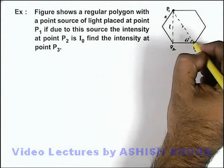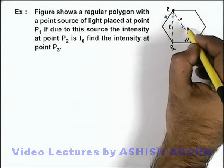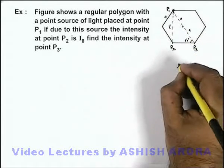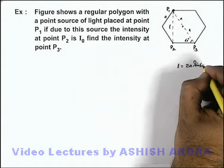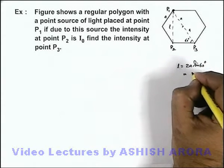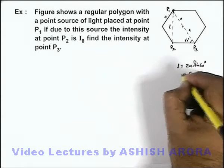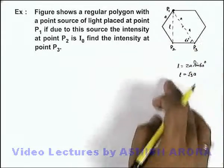So this length can be written as a and a, 2a. So the value of l here we can write as 2a sin 60 degrees. In this situation the value is √3a, that is the value of l, the distance from P1 to P2.